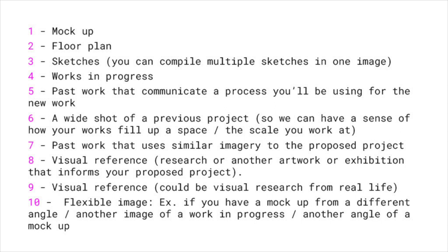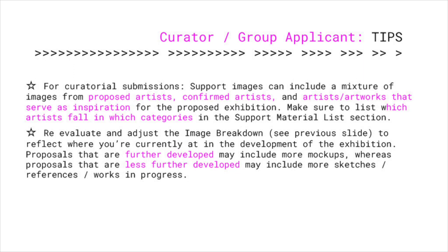The 10th image is flexible — if you have a mock-up from a different angle, another image of a work in progress, or another angle of a mock-up, those work well here. Use this as a guideline and attune it to how you're making work and where you're at in the process. For curator or group applicants, support images can include a mixture of images from proposed artists, confirmed artists, and artists or artworks that serve as inspiration for the exhibition only. Make sure to list which artists fall within which categories in the support material list section. Re-evaluate and adjust the image breakdown to reflect where you're at currently in the development of the exhibition — proposals that are further developed may include more mock-ups, whereas less developed proposals may include more sketches, references, and works in progress.